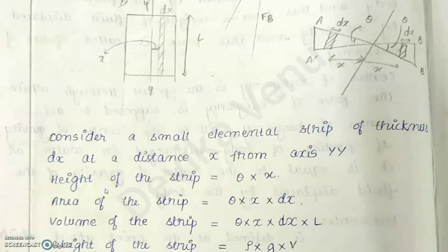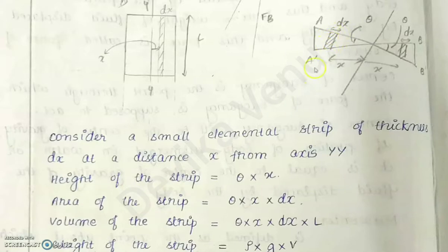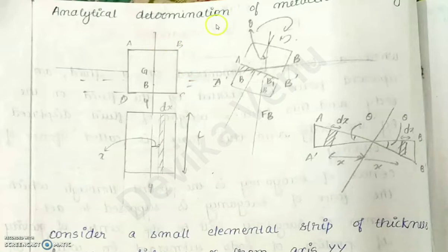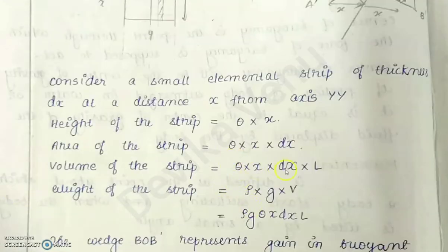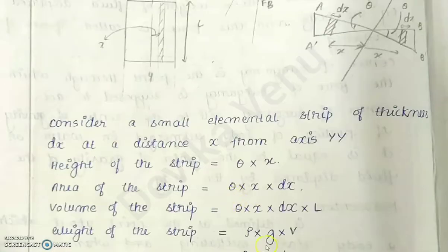The area of the strip will be theta·x·dx. The volume of the strip, considering L as the width of the floating body, will be theta·x·dx·L. The weight of the strip is rho·g·theta·x·dx·L.